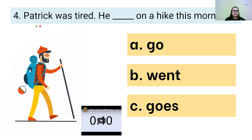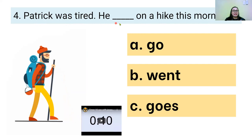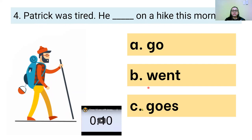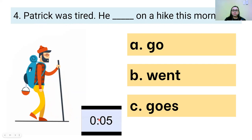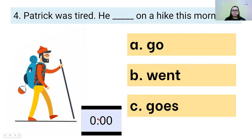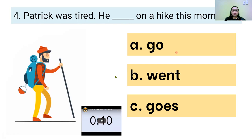This is the last one for our review. Listen carefully. Patrick was tired. He blank on a hike this morning. A, B went, or C goes — A, B, or C. Write your answer. The correct answer is B. Patrick was tired. He went on a hike this morning. Good job.